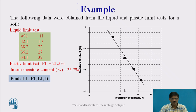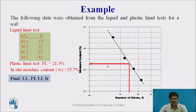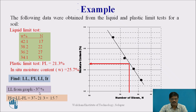For the liquid limit, we plot water content versus number of blows on a semi-log graph using the given table. Joining the four points gives the flow curve. Since liquid limit is the water content at 25 blows, drawing a line at 25 blows gives a liquid limit of approximately 37%. The plasticity index is therefore 37 minus 21.3, which equals 15.7.